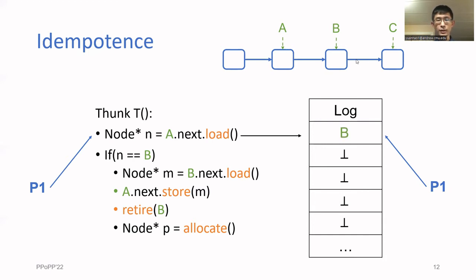To execute line one, P1 first reads A.next and writes that value to the log. This helps ensure that if a helping process re-executes this load in the future, it will still see the same value. Then P1 enters the if statement and does the same thing for the second load.